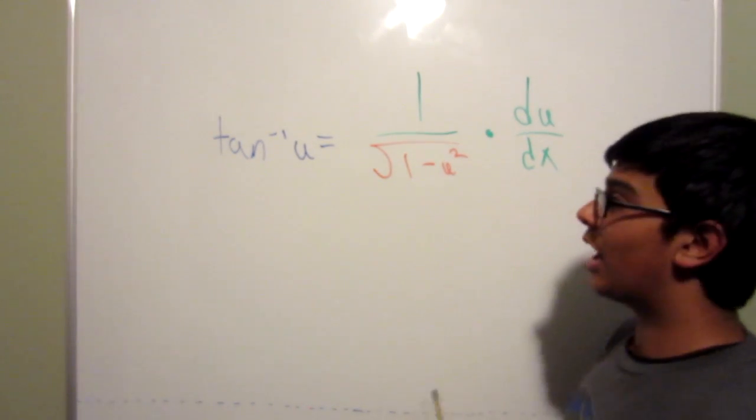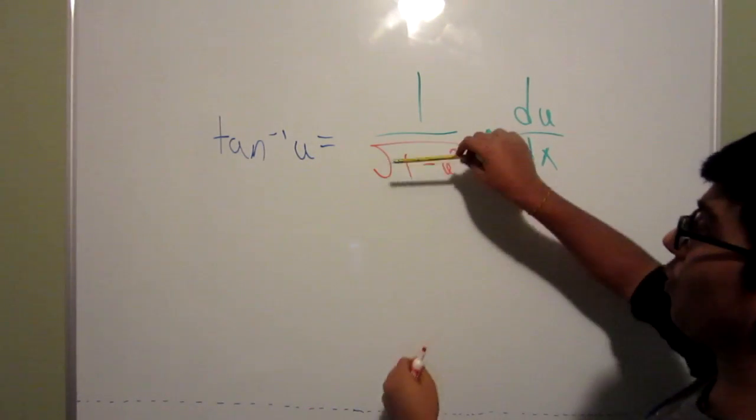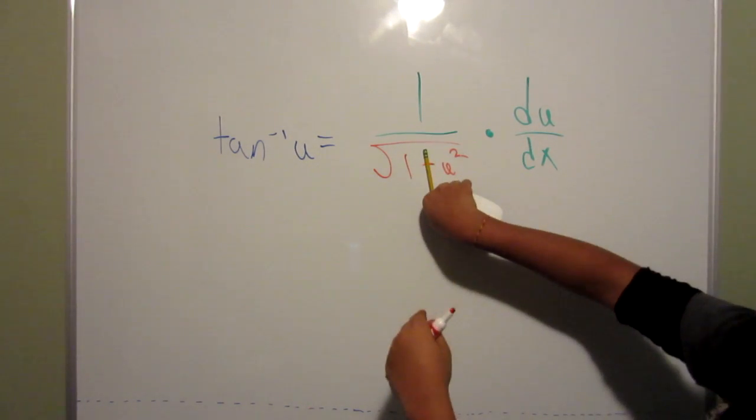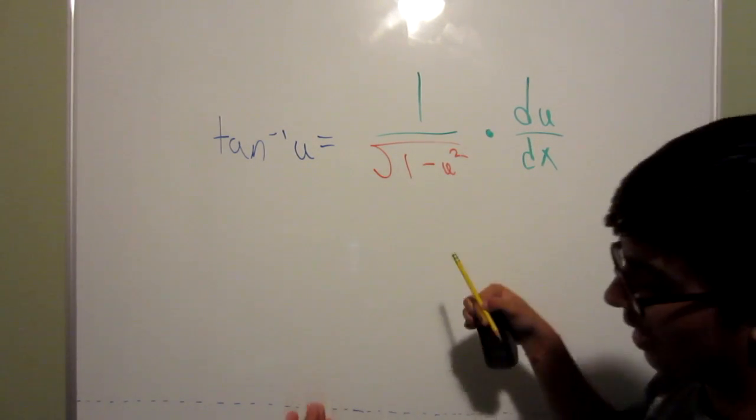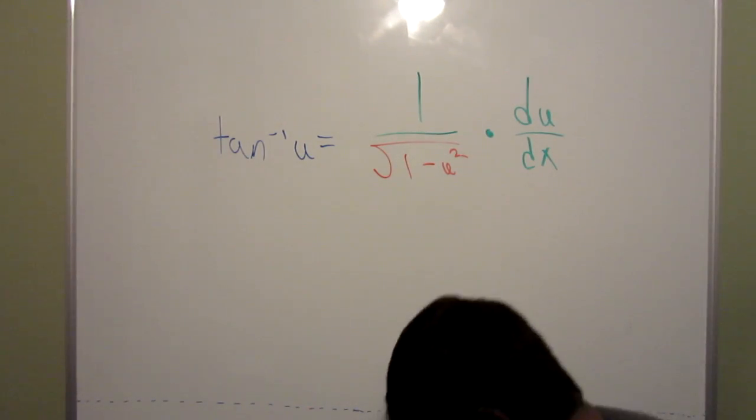Now the way to remember how to do the tangent inverse of u is you take the sine formula, you take the root of the sine formula and you move it to cross with the negative sign to make it a plus. And it sounds goofy, but that's actually how the formula is.